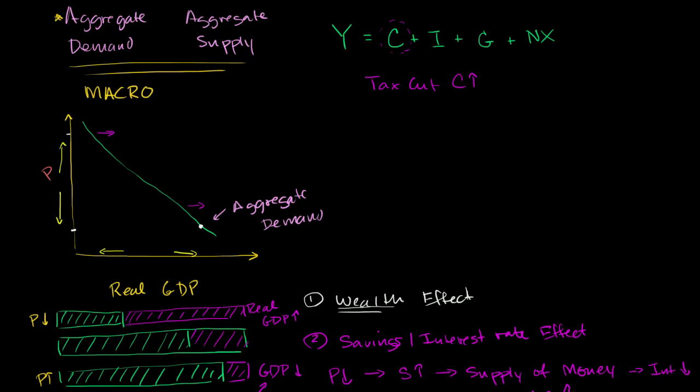Likewise, investment. Maybe the government allows companies to write off investments that they make this year, or there's some tax benefit for making investments this year. For whatever reason, investment were to go up, or it could just be a newly discovered industry where all of a sudden there are resources that people start investing in. That would cause aggregate GDP to go up—more investment.